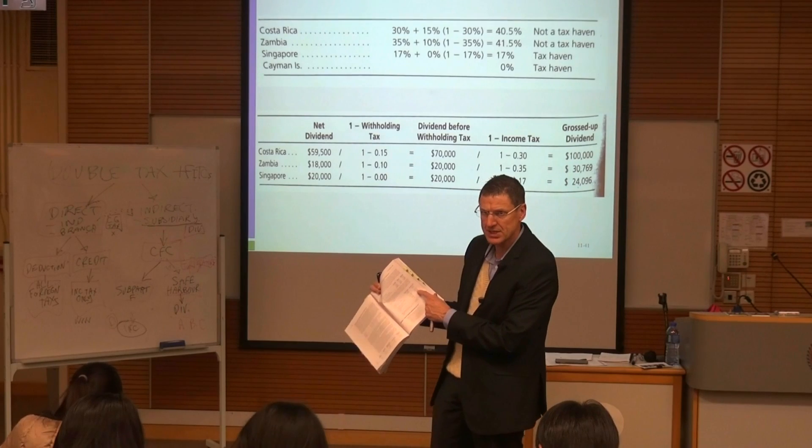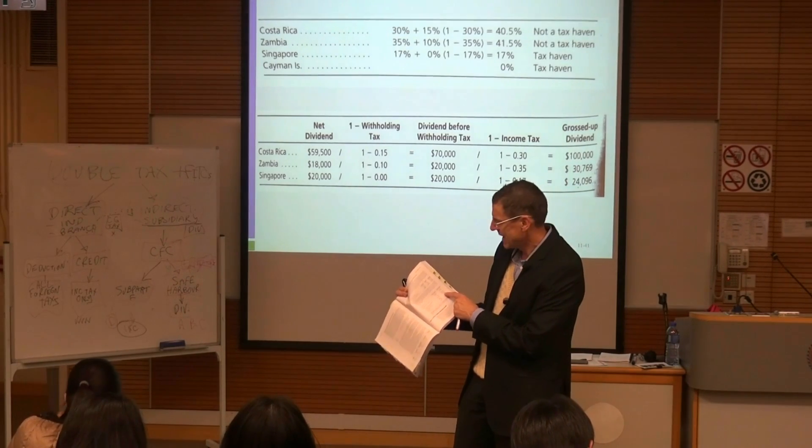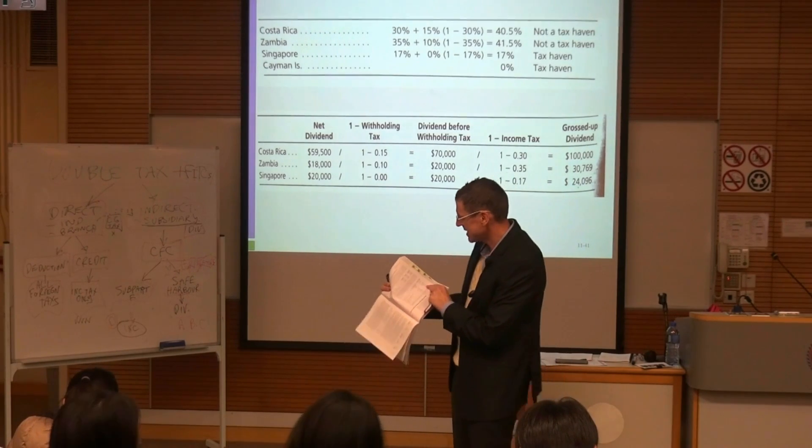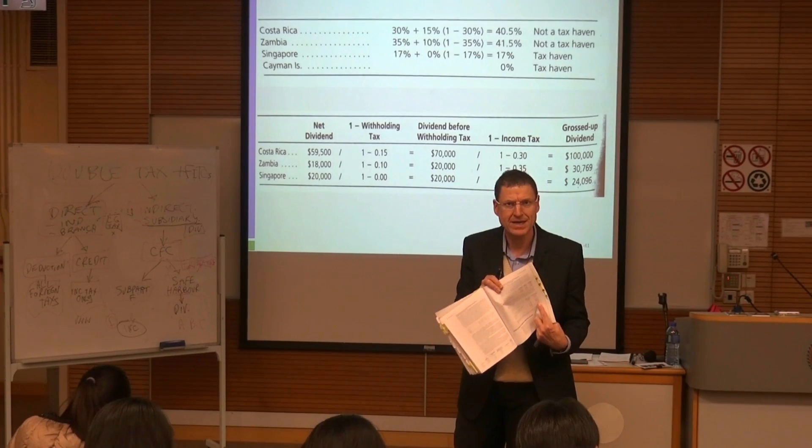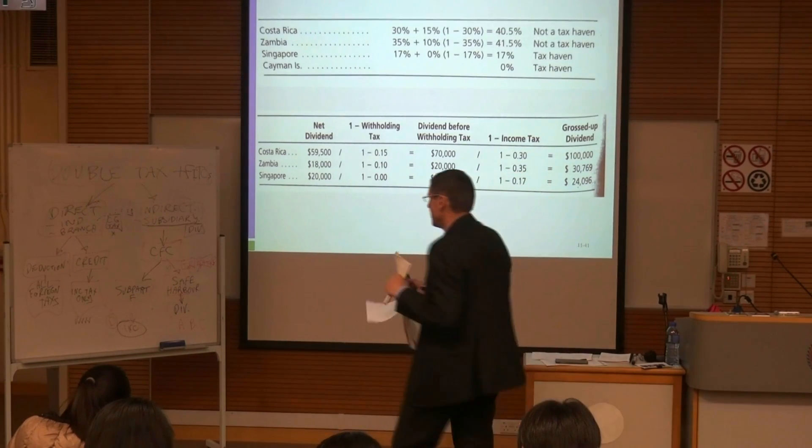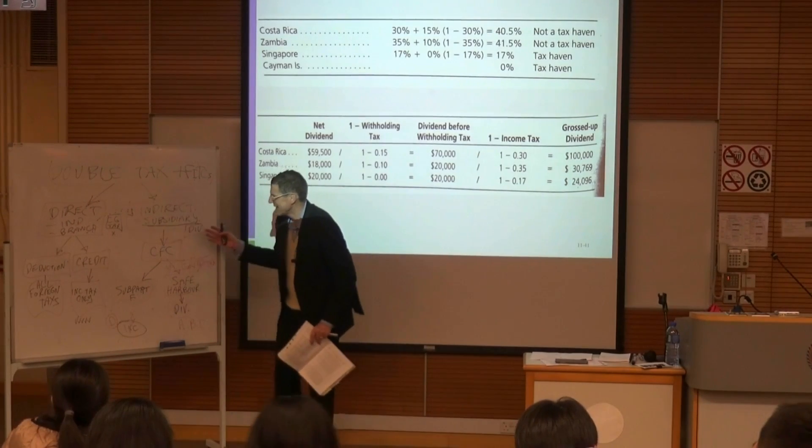Then you've got the foreign tax credit allowed, 54,203, because that's what you're allowed to pay, because that's how much you paid on income tax in the US and you get that back.